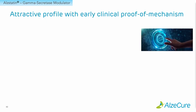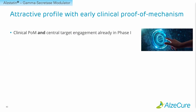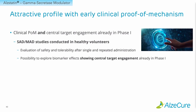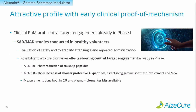We also see an attractive profile for clinical trials, because we can achieve clinical proof of mechanism and central target engagement already in phase one clinical trials in healthy volunteers. There we could evaluate both safety and tolerability, but also explore biomarker effects — showing central target engagement by looking at reductions of A-beta 42 and 40 while assessing increases of the shorter fragments A-beta 37 and 38. These measurements can be done in both CSF and plasma, as biomarker kits are available.